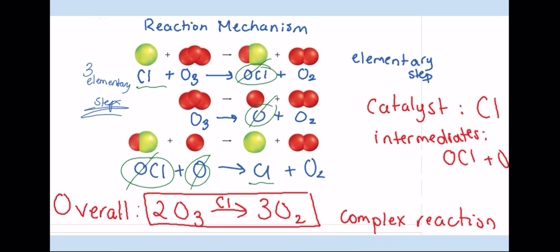However, intermediates are the opposites. They are first products and then reactants. So let's look at OCl and O. We see them first as products, and in the final step, we see them as reactants. And you notice in the overall equation, they aren't mentioned. And Cl is written above the arrow because it's a catalyst and it isn't consumed. This all is called a complex reaction, and it's also called a reaction mechanism.